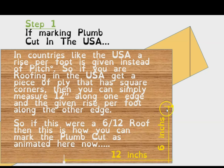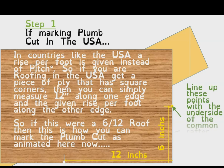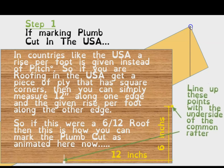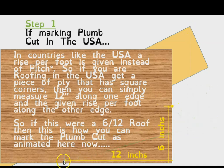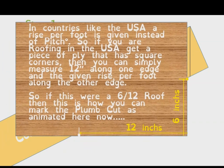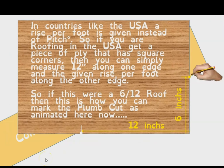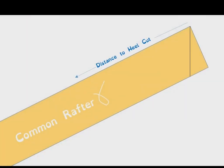These two points are kept in line with the underbelly of the common rafter. You'll see this piece of plywood move and line up with the top corner, keeping those two points aligned with the underbelly of the rafter, and then mark the angle with a pencil. So if you're in the United States, for a 12/6 roof — where for every 12 inches of run the roof has a rise of 6 inches — you can use that approach to mark the plumb cut.